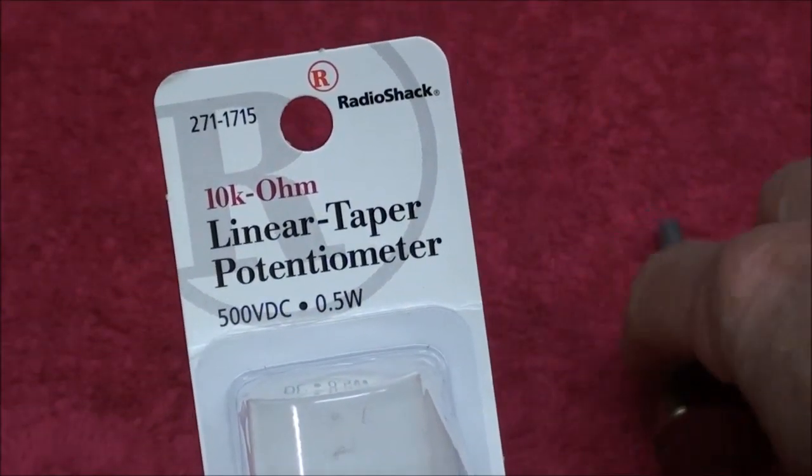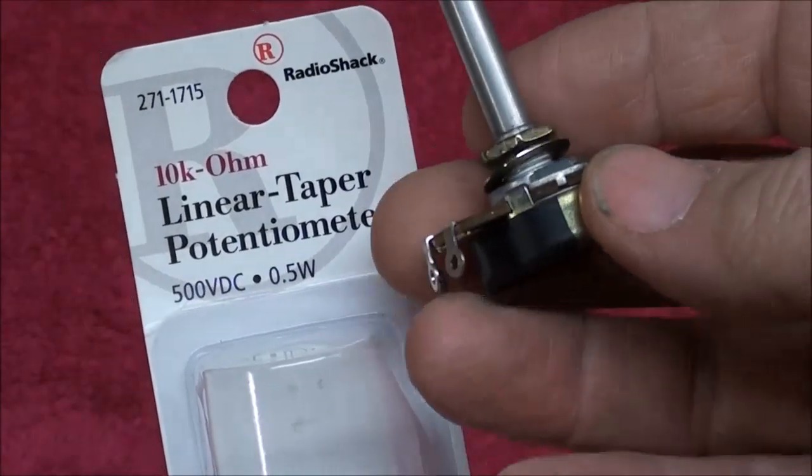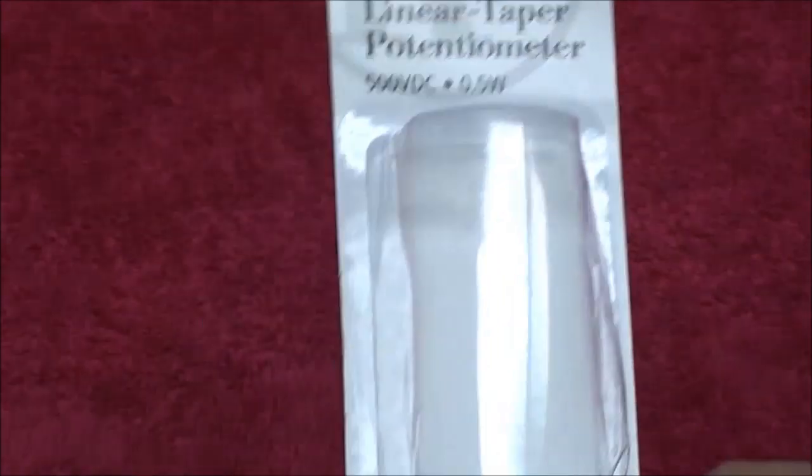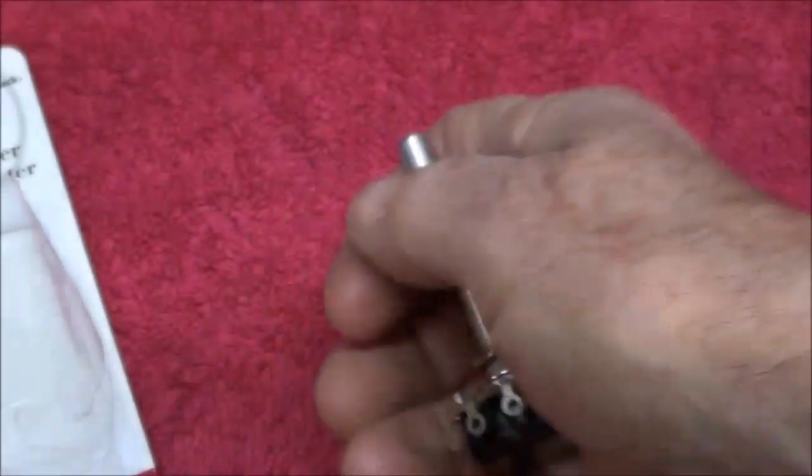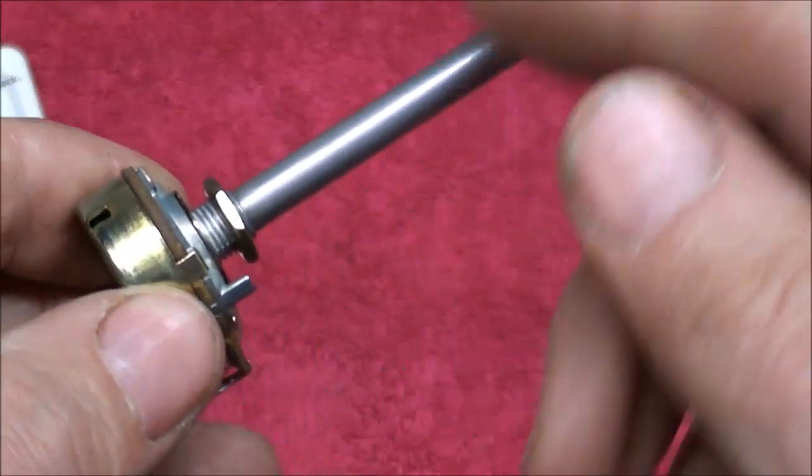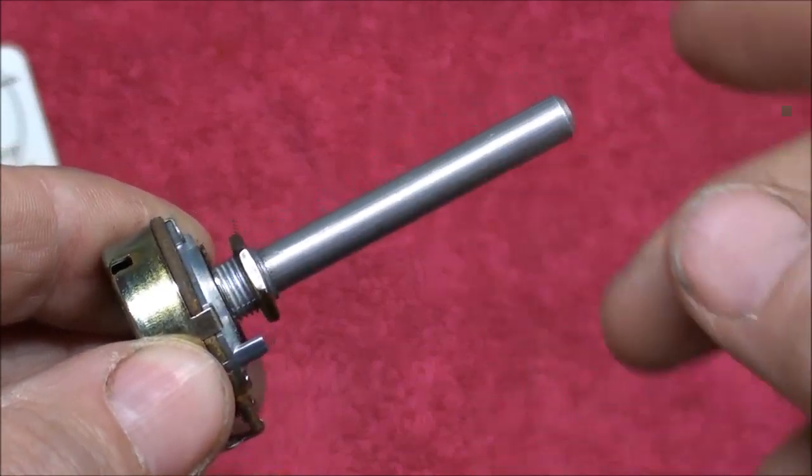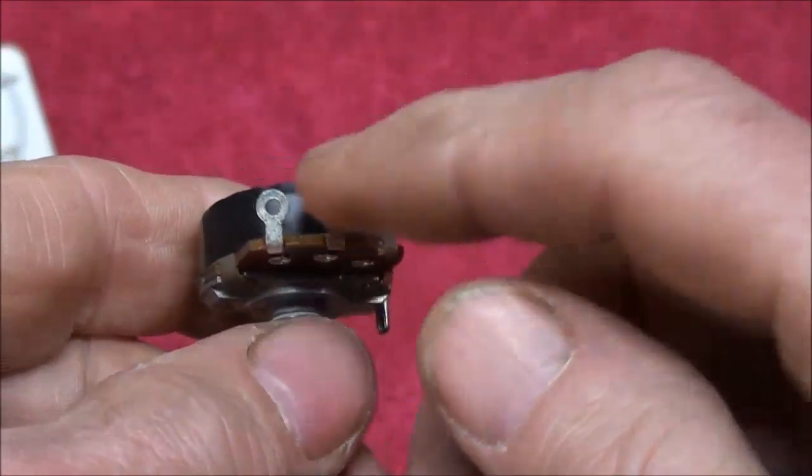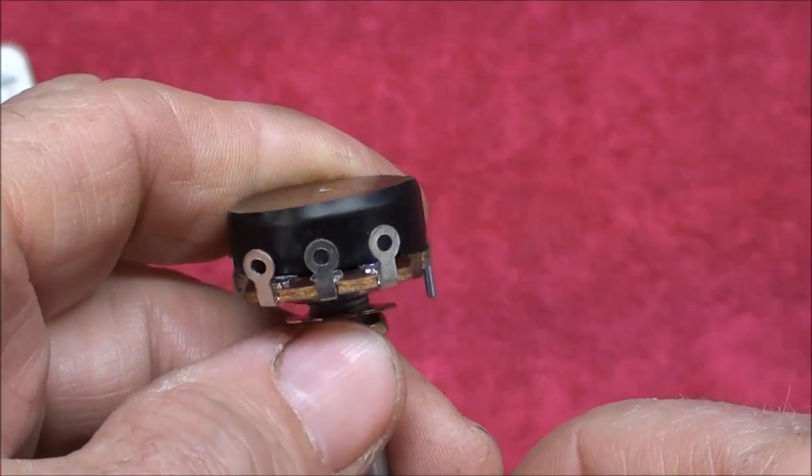I bought this 10k potentiometer at Radio Shack, and they're only three or four dollars, they're quite cheap. It has a shaft longer than necessary, so I will cut it off later on as needed, and there are three terminals on it, and I'll show you how to hook those up.